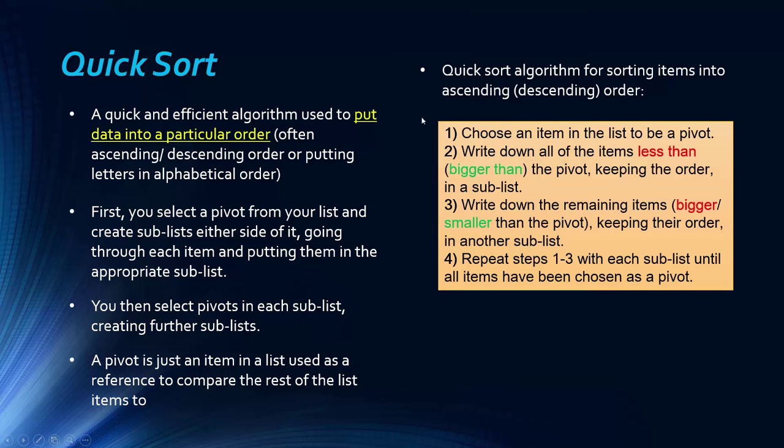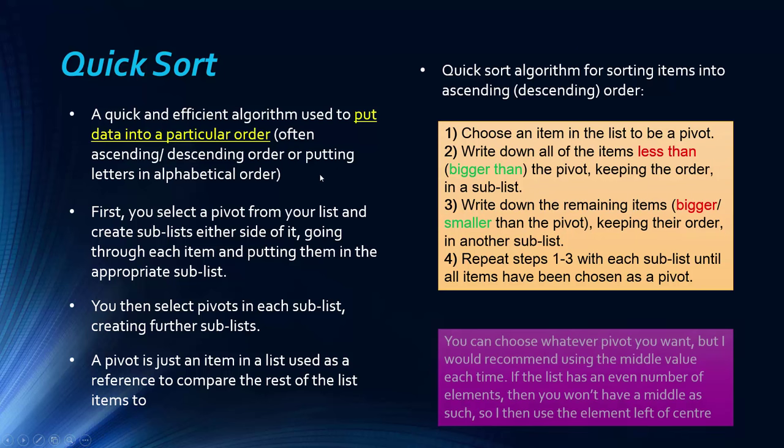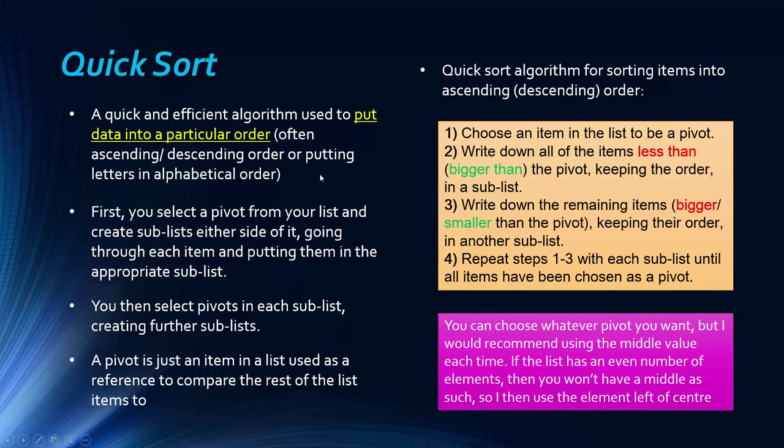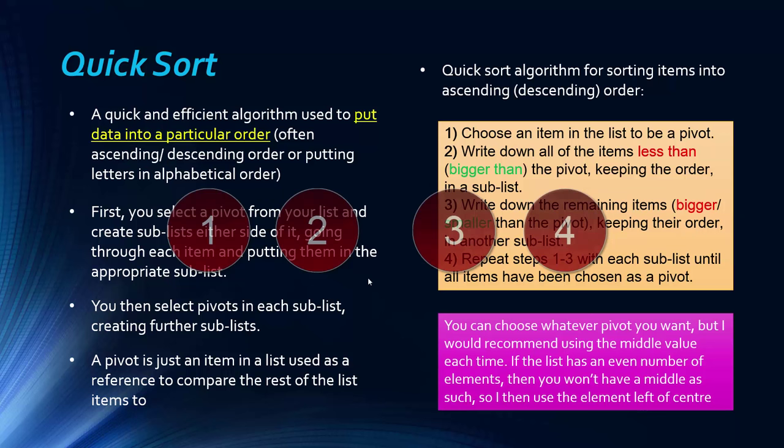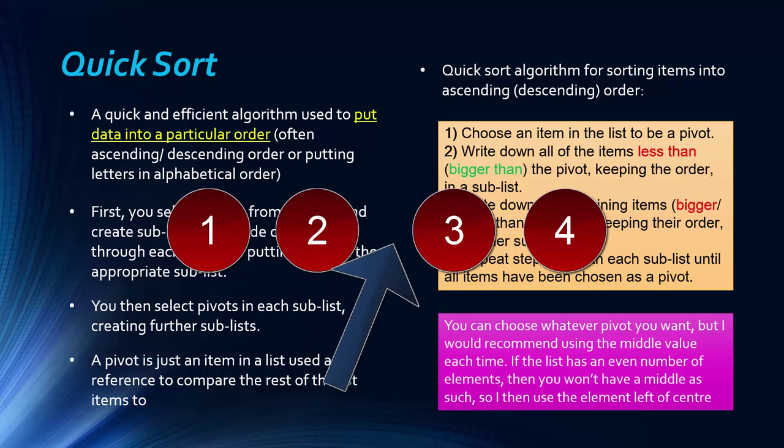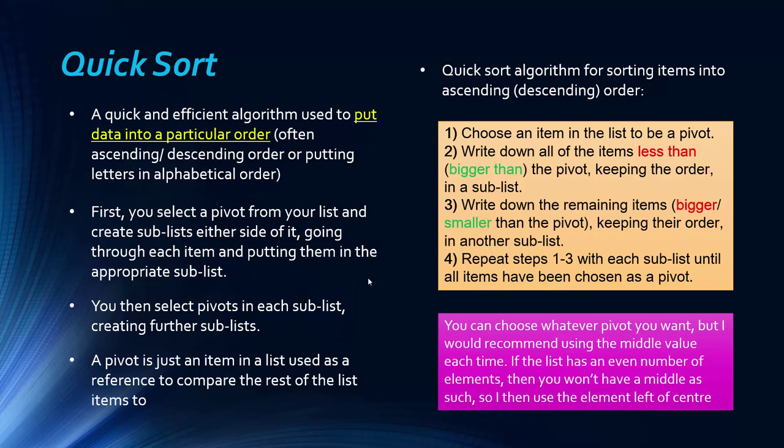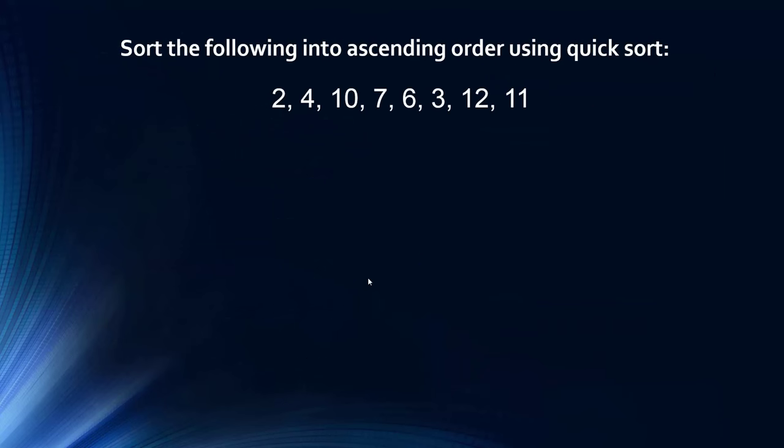So formally, this is kind of what the algorithm looks like. I won't really talk you through it, because hopefully the example in a second will make it clearer. But what I just want to say is you can choose whatever pivot you want. I always use the middle value where I can. If you have an even number of items, so if you think about four items - one, two, three, and four - the middle of it is in between two and three. And so I always use the convention left of middle is my quote middle value, as you'll see in a second.